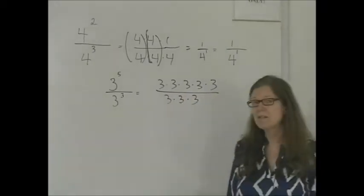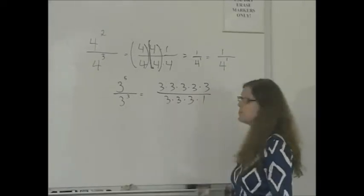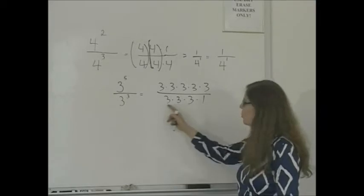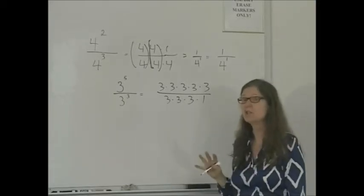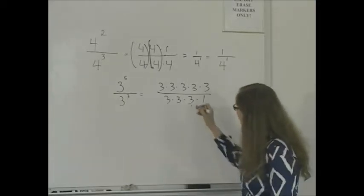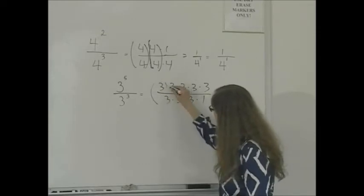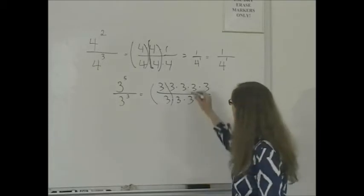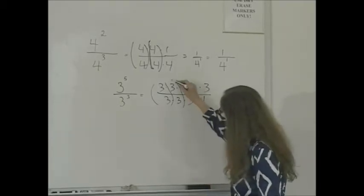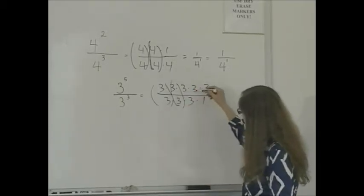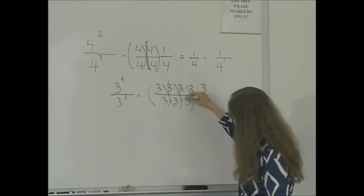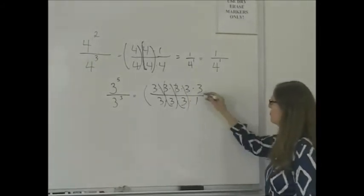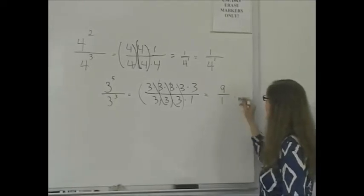Now, if I want, I could put times 1 because anything times 1 is itself, so I can add times 1 on the denominator — it won't change the value. So again, I could group these. Here, this is 3 over 3, which is 1 — anything divided by itself is 1. This is 3 over 3, which is 1. And this is 3 over 3, which is 1. And I'm left with 3 times 3.